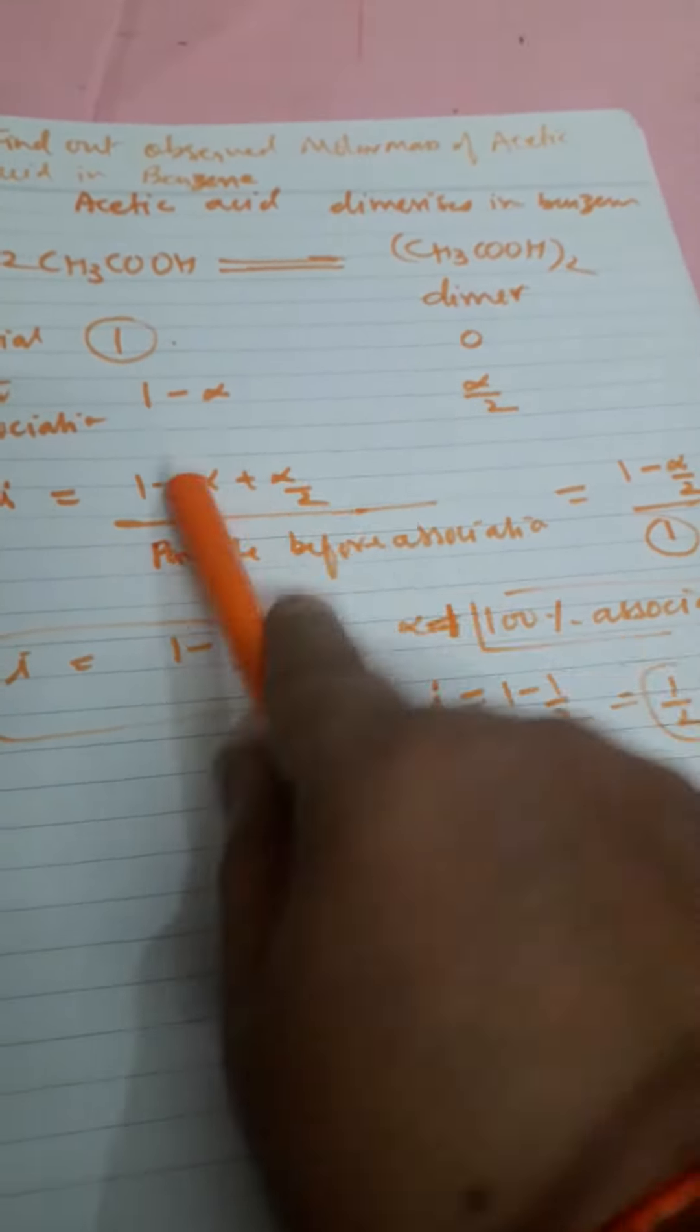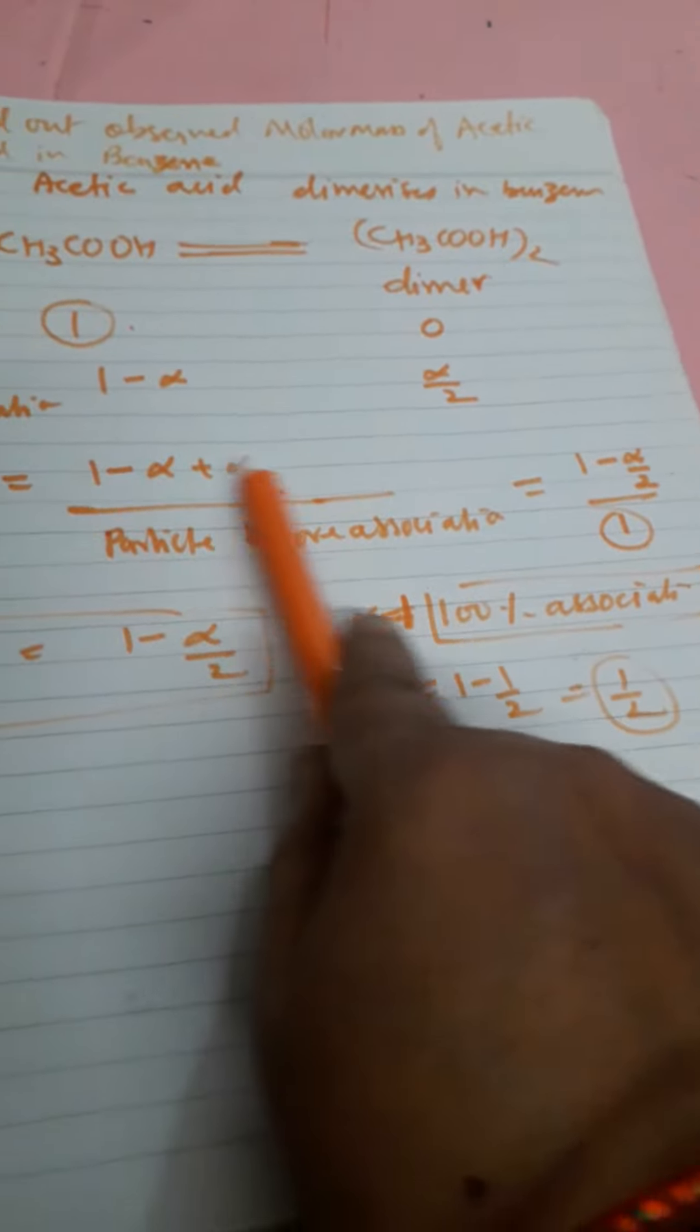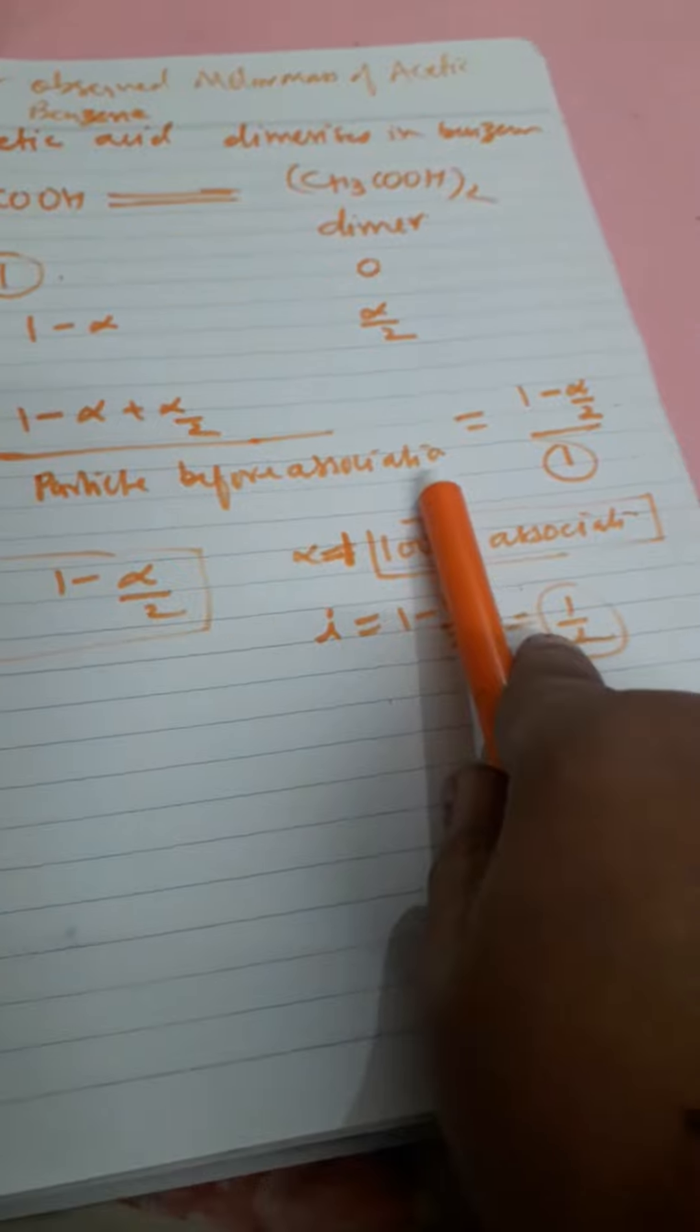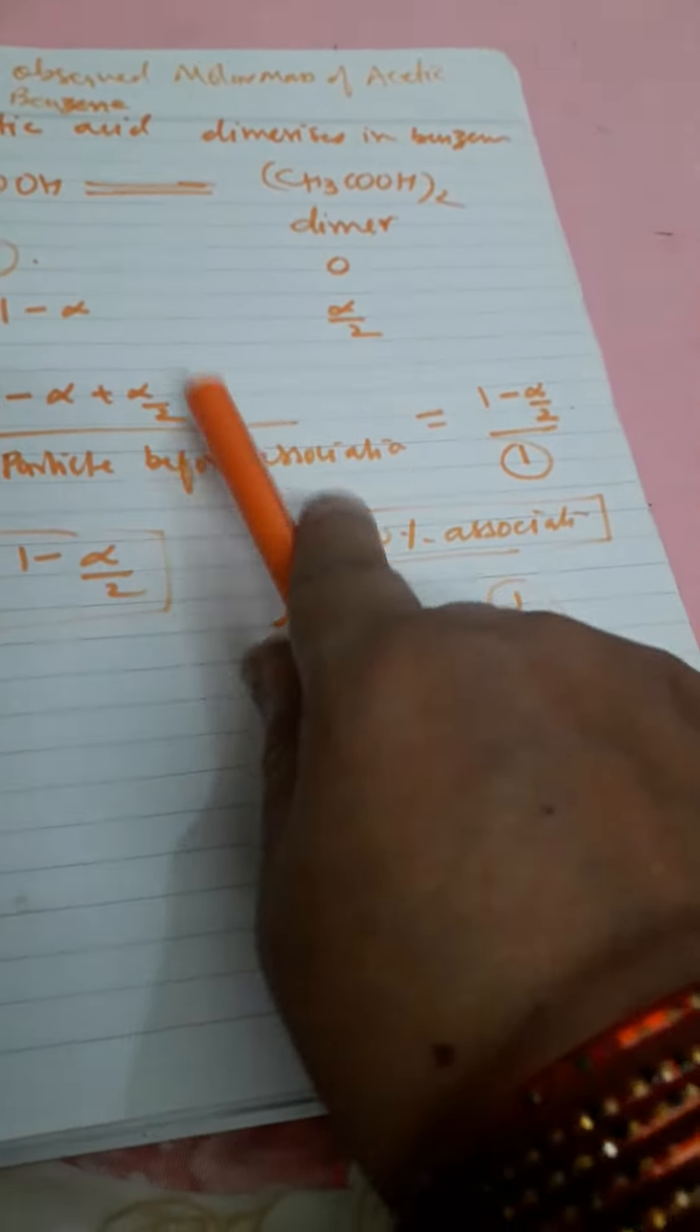One minus alpha plus alpha by two, by particles before association. Here these are the particles after association and these are the particles before association. Here after, here before. So it will be one minus alpha plus alpha by two.